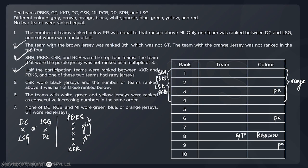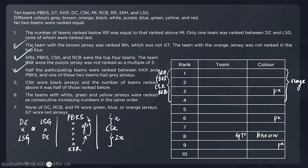Statement five: CSK wore black jerseys, and the number of teams ranked above CSK was half of those ranked below it. If there are X teams above CSK, then 2X teams are below it, and X + 2X = 9, giving X = 3. So there are three teams above CSK and six below, meaning CSK is ranked fourth with a black jersey.